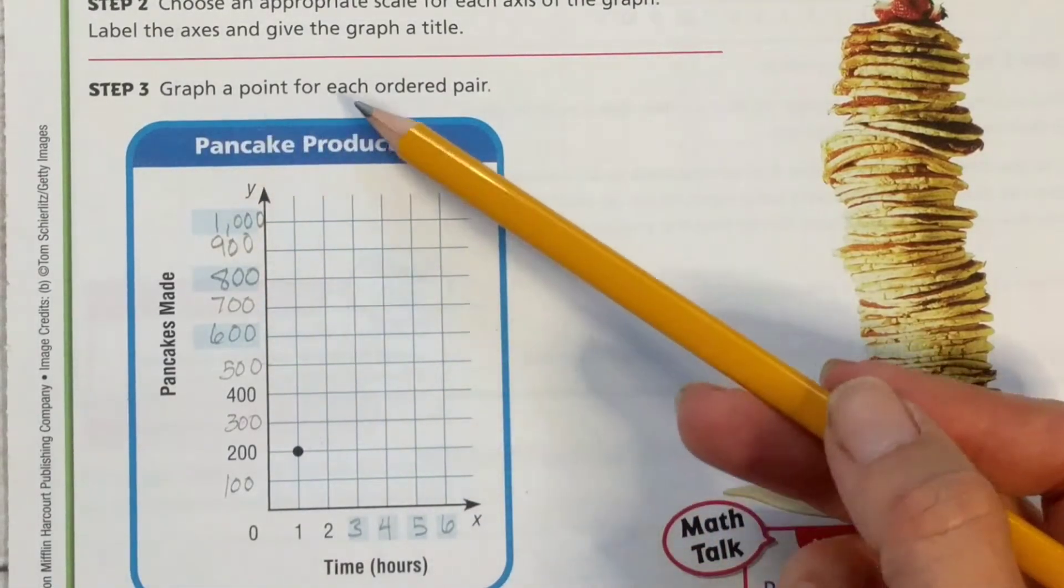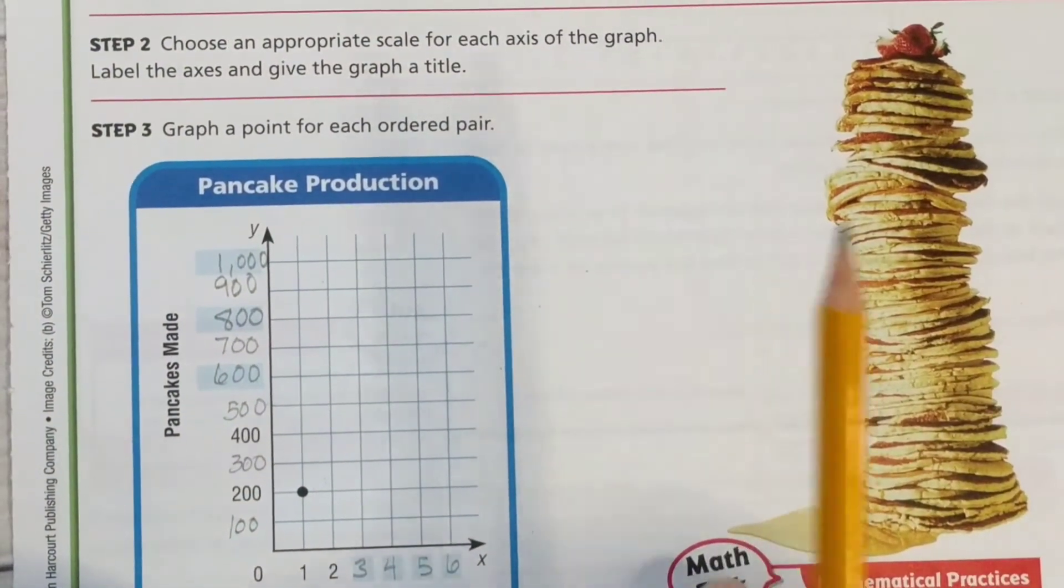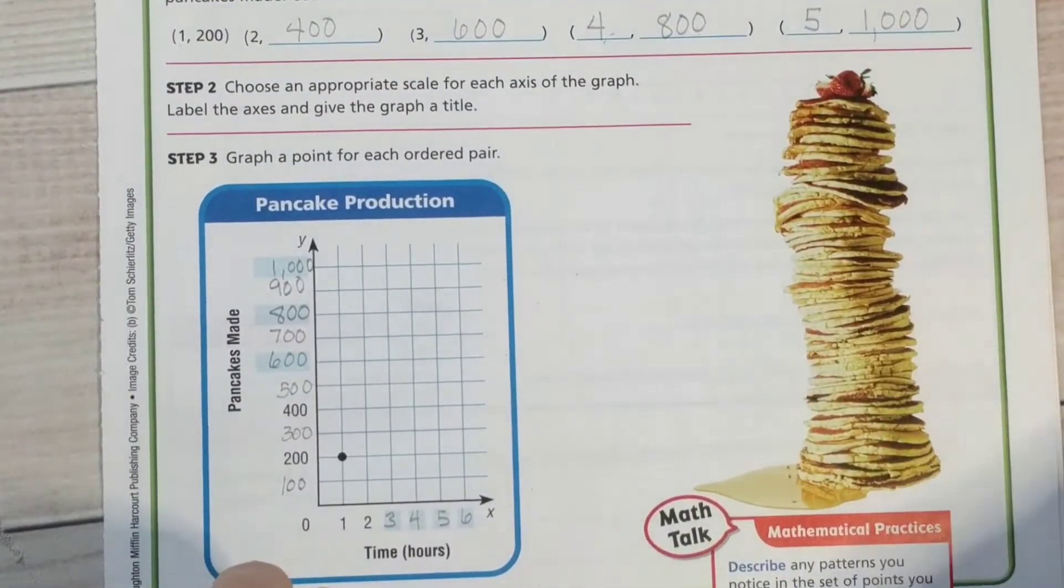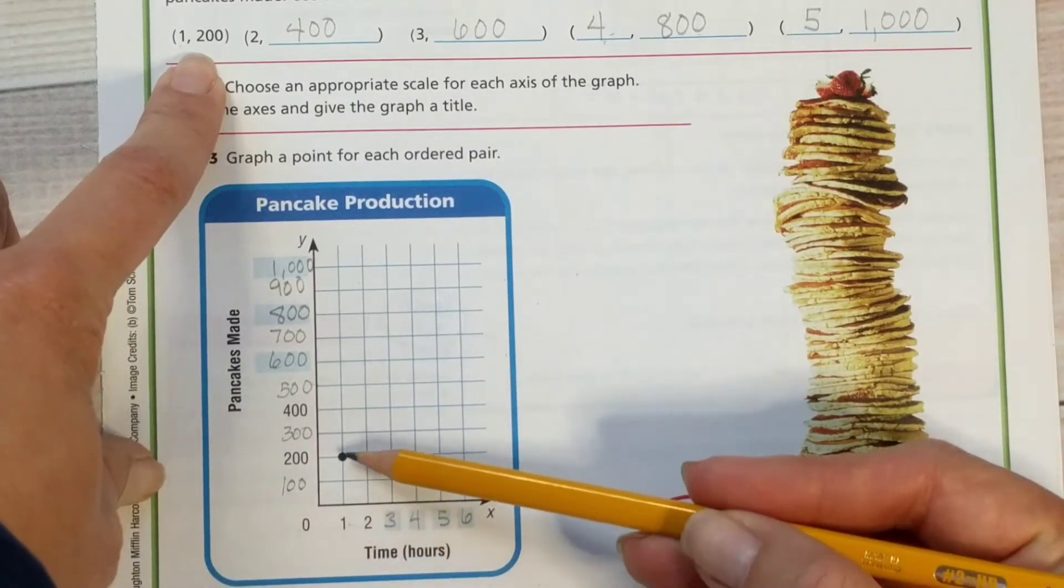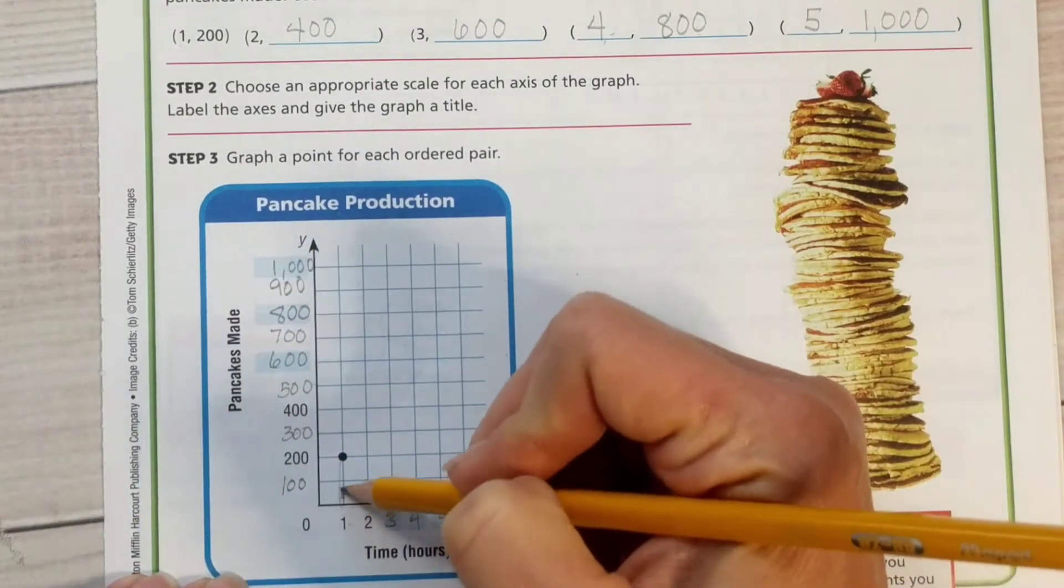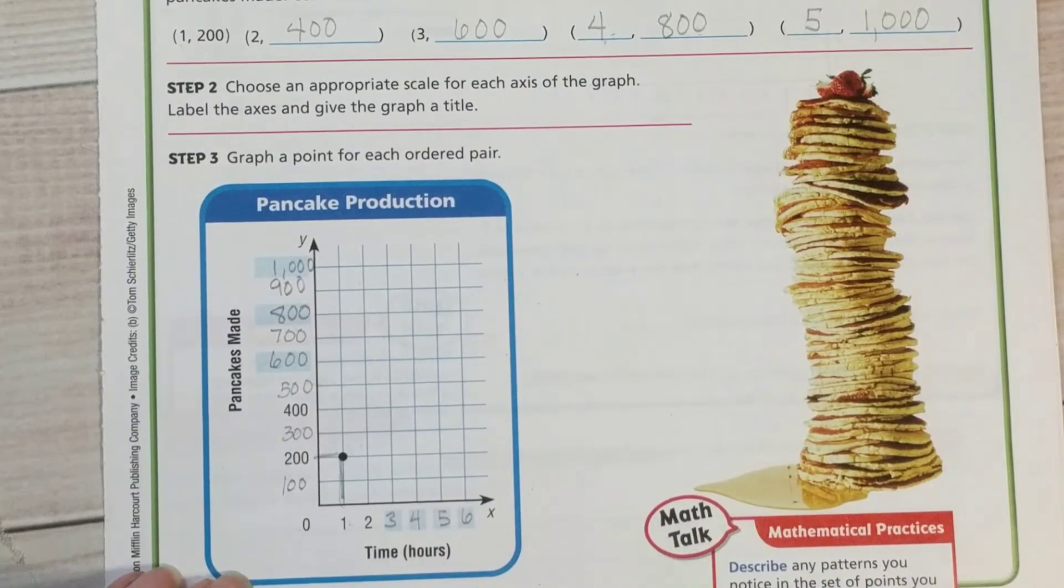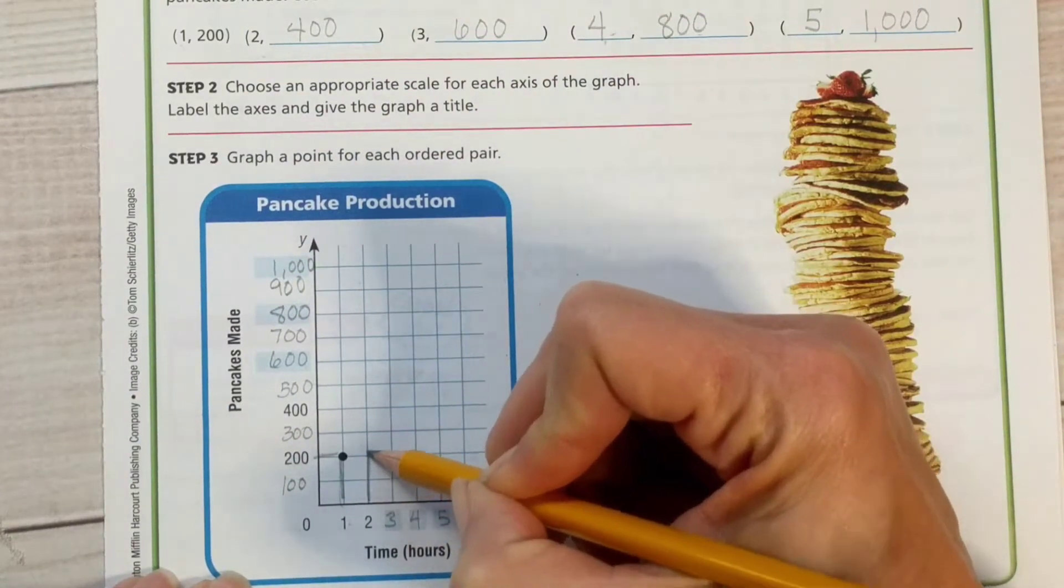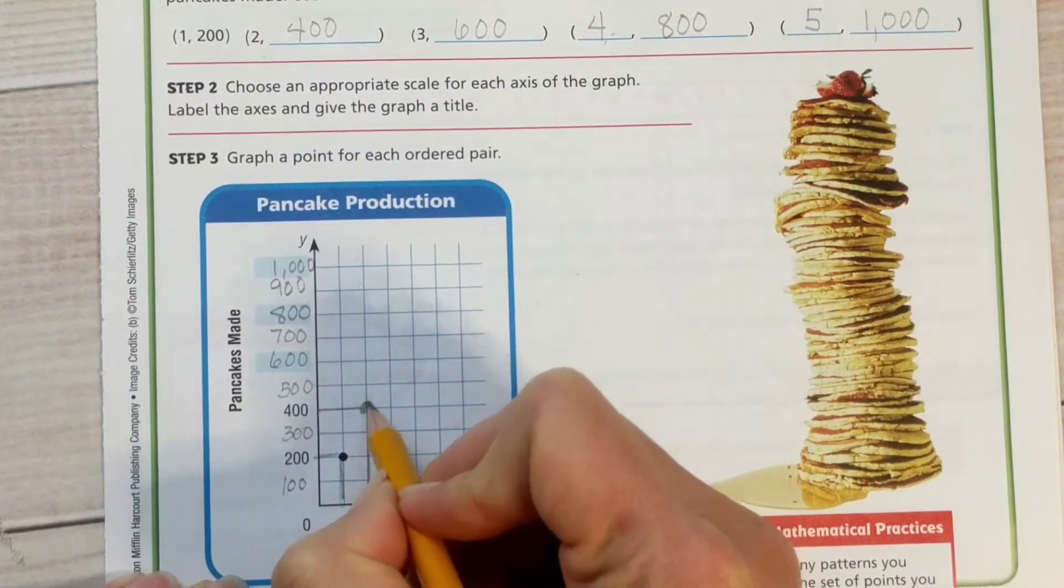Alright, now finally we're going to graph a point for each ordered pair. So our ordered pairs, let's zoom out a little bit so that we can see our ordered pairs. Good. Alright, so we have 1 and 200. So that's our first point connects 1 and 200 right here. You went up to 200, you went across to 1, that's the first point. Alright, our second point is 2 and 400. So we're going to start at 2, go up to 400, and from 400 we're going to go across to the 2 and put a dot right there.